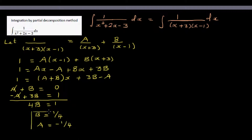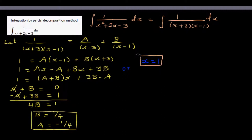The second, faster method is substitution. To cancel the A term, let x equal 1. Substituting x equals 1, the A term cancels and we get 1 equals 4B, so B equals 1/4.